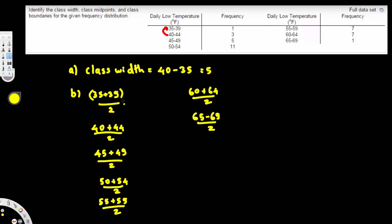Now let's go ahead and calculate these one by one. The first one gives you 37, the second gives you 42, then 47, then 52, then 57, then 62, and finally 67. You can see the pattern — it's increasing by 5 each time, and if you pick up on the pattern it goes much faster.